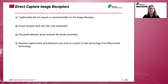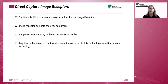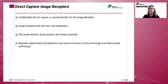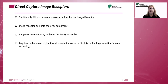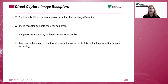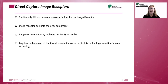Direct capture conversion systems were originally cassette-less systems with the IR being an integral part of the X-ray unit. The flat panel detector replaced the bucky assembly and was never touched by the technologist. Traditional X-ray units had to be replaced if the department was converting from film screen technology to digital imaging. Today, there are wireless detectors that can be used with any existing X-ray equipment.